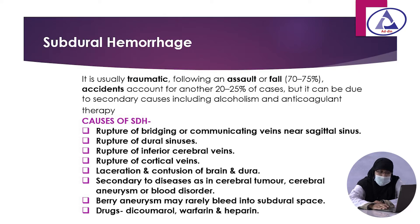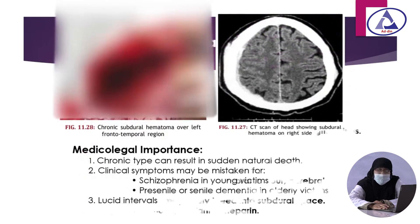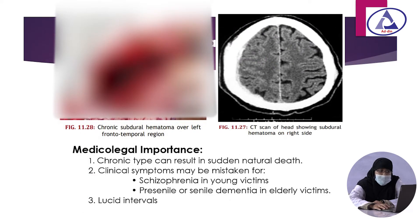The causes of subdural hemorrhage are rupture of bridging or communicating veins near the sagittal sinus, rupture of dural sinus, anterior cerebral vein, and rupture of cortical veins. It sometimes also occurs in berry aneurysm, but is rare in the subdural space. Drugs including anticoagulants — warfarin and heparin — are common causes. The medico-legal importance is that chronic subdural hemorrhage can result in sudden natural death, and clinical symptoms may be mistaken with schizophrenia in young victims and pre-senile or senile dementia in the elderly. Lucid interval is also commonly seen here.